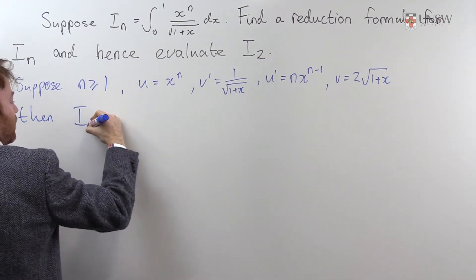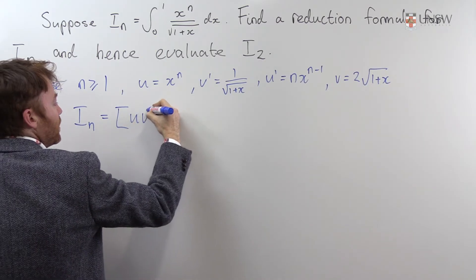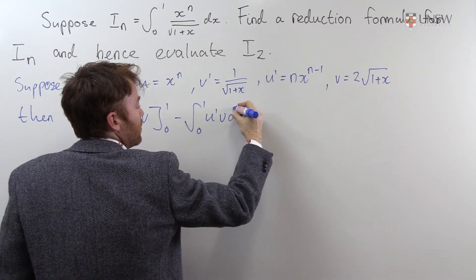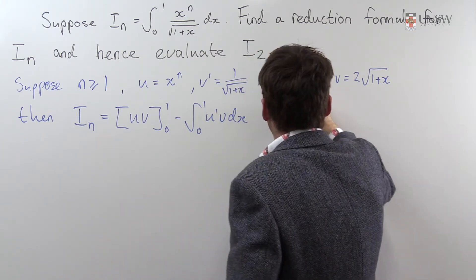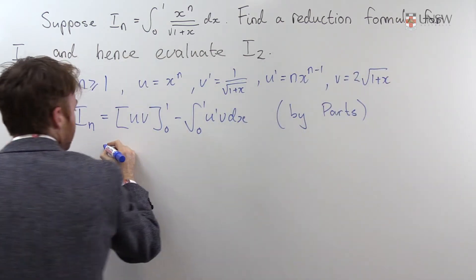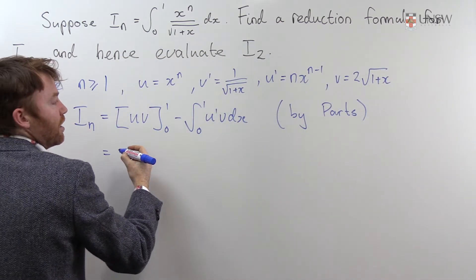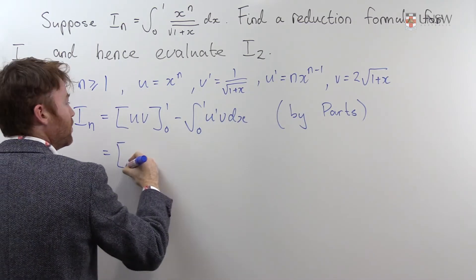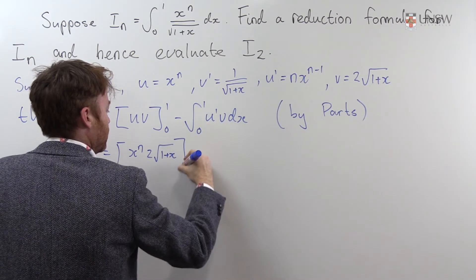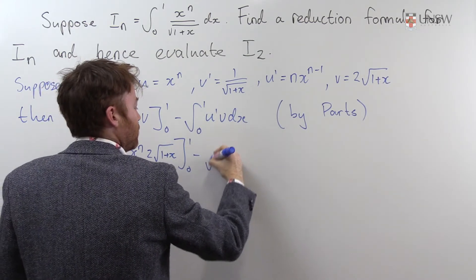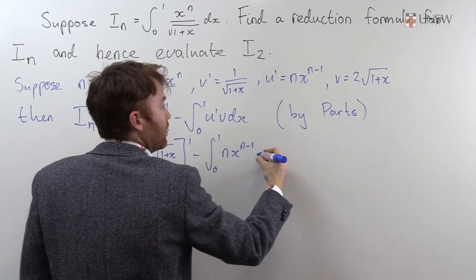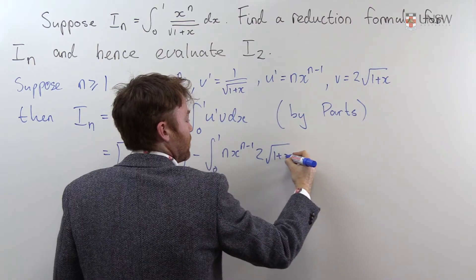Then In can be rewritten as uv with the limits minus the integral from 0 to 1 of u dash v dx — this is by parts. Substituting in: u is x to the n, v is 2 root 1 plus x, evaluated from 0 to 1, minus the integral from 0 to 1 of n x to the n minus 1 times 2 root 1 plus x dx.